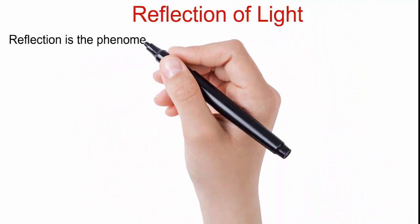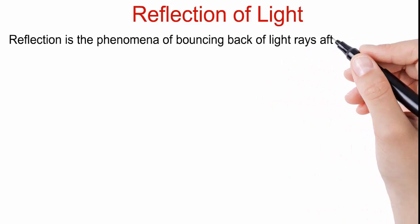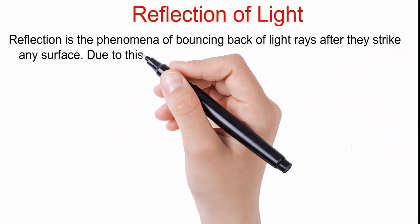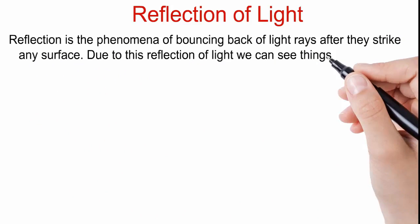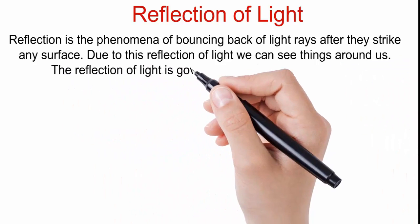Now, coming to reflection of light. Reflection is the phenomena of bouncing back of light rays after they strike any surface. Due to this reflection of light, we can see things around us.